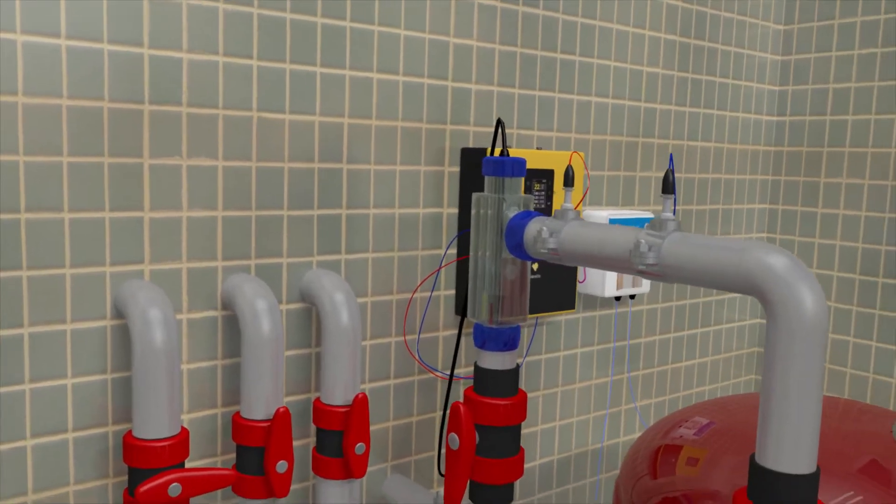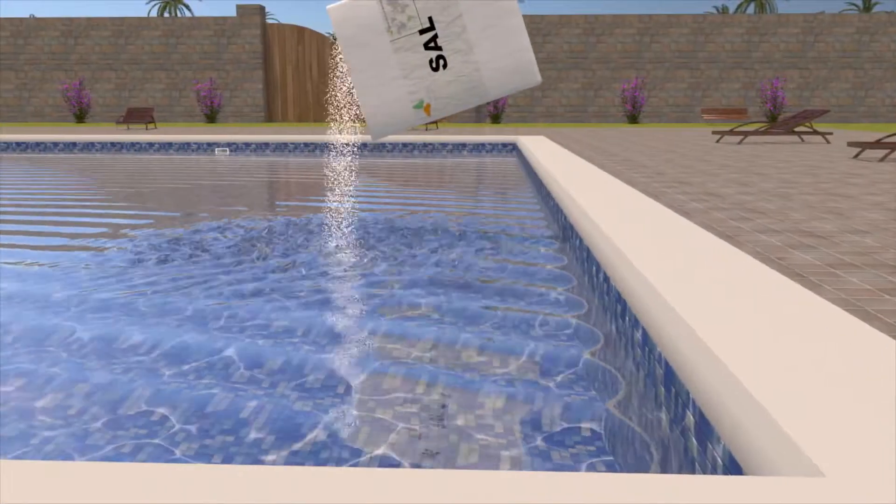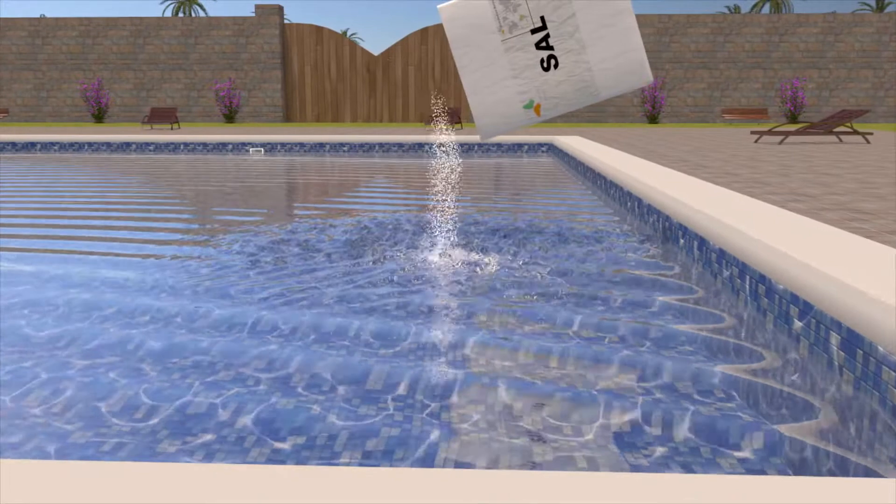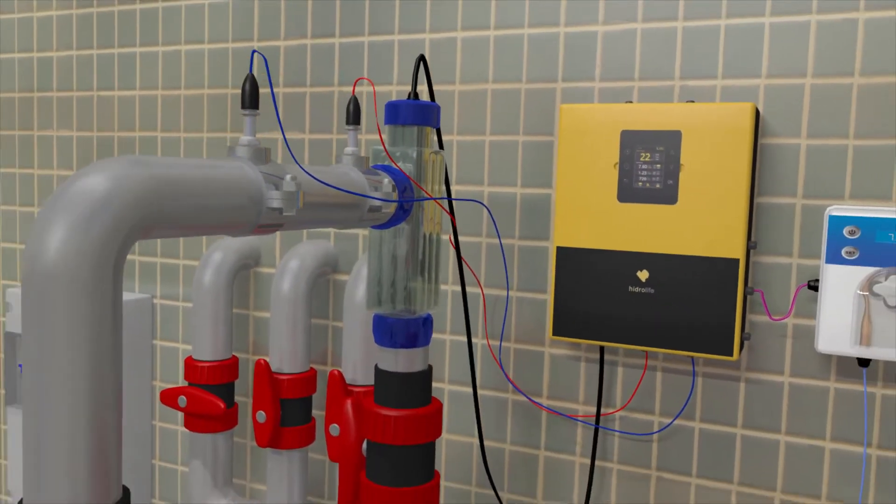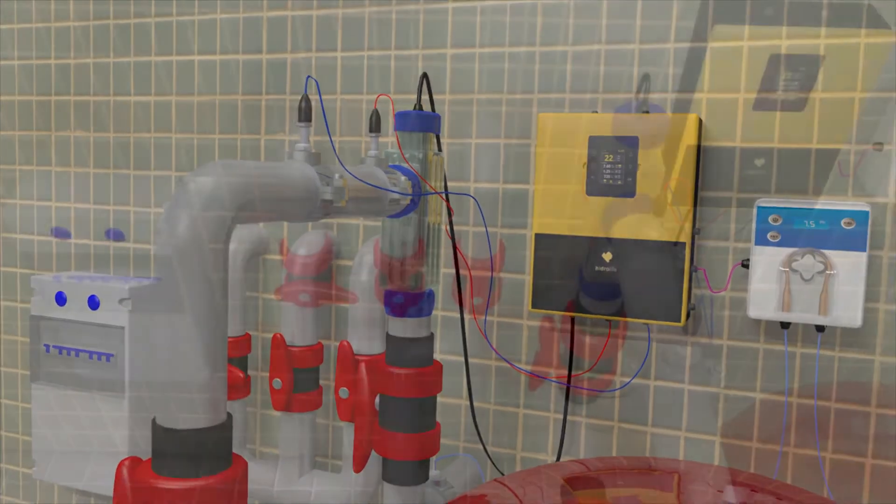When we install a salt electrolysis chlorine system, we must add between 3.5 and 5 grams of salt per litre of water to our pool. To get a rough idea,